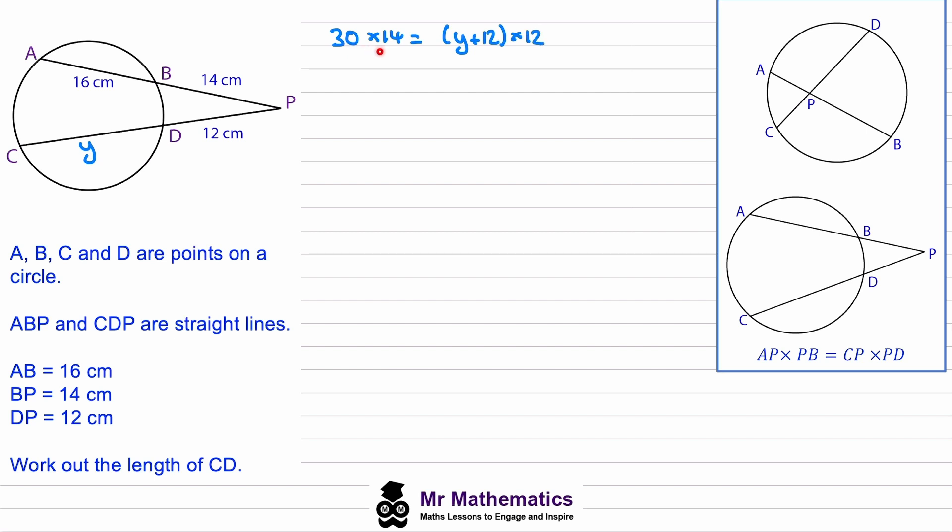We can work out 30 times 14 as 420. Then we can expand out these brackets. So we get 12y plus 144. We'll take away this 144 from both sides. So 276 will equal 12y. We'll divide both sides by 12. So y will equal 23 centimeters. And this is the length CD.